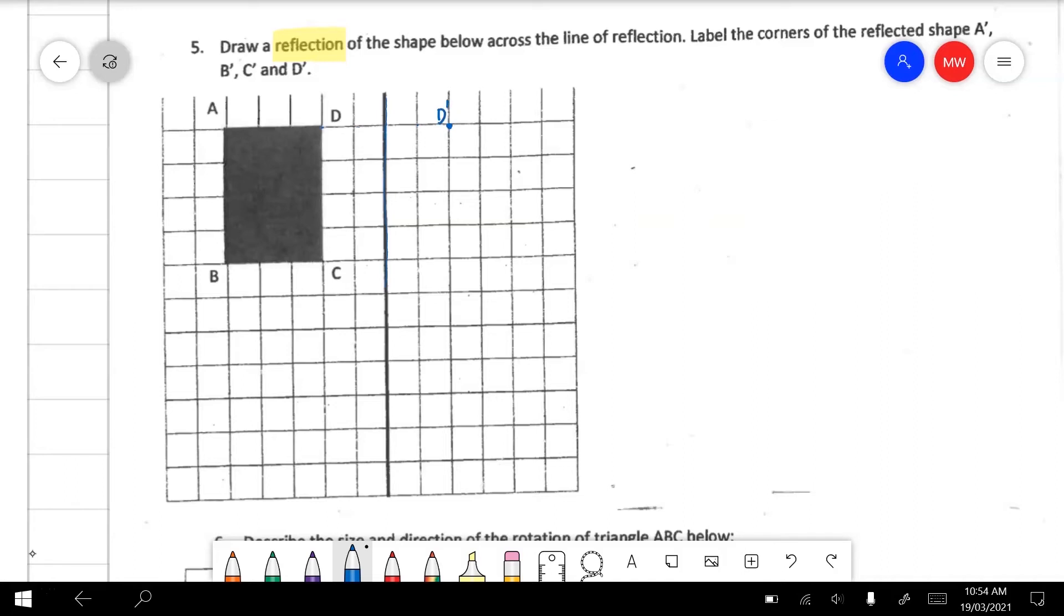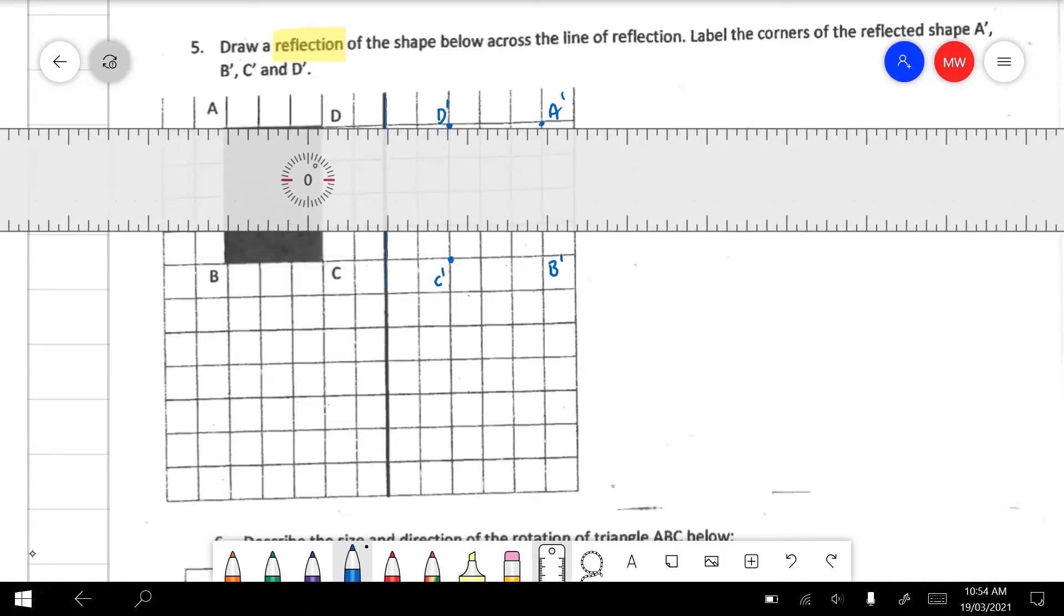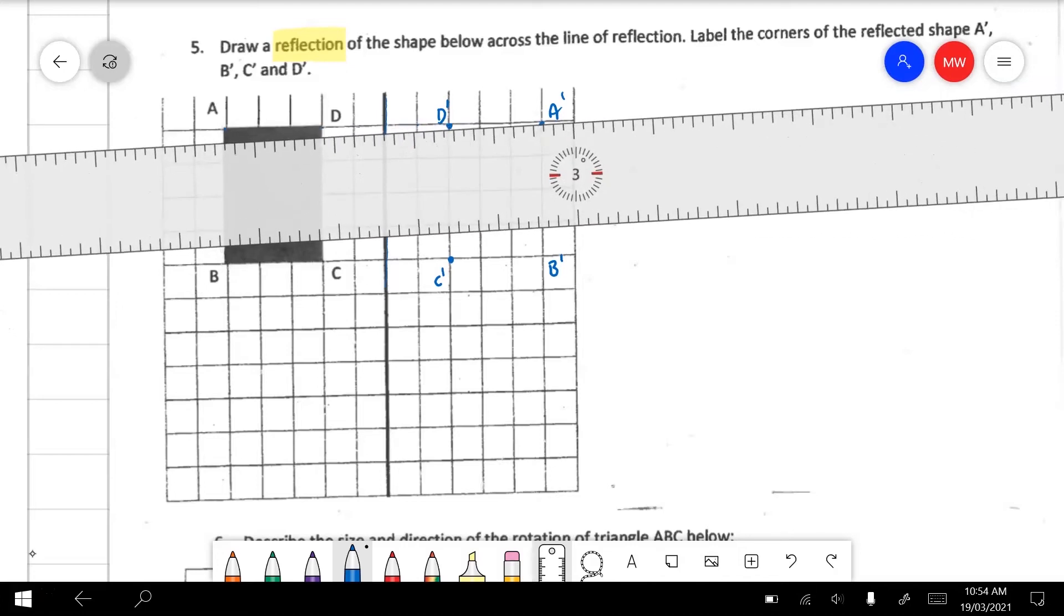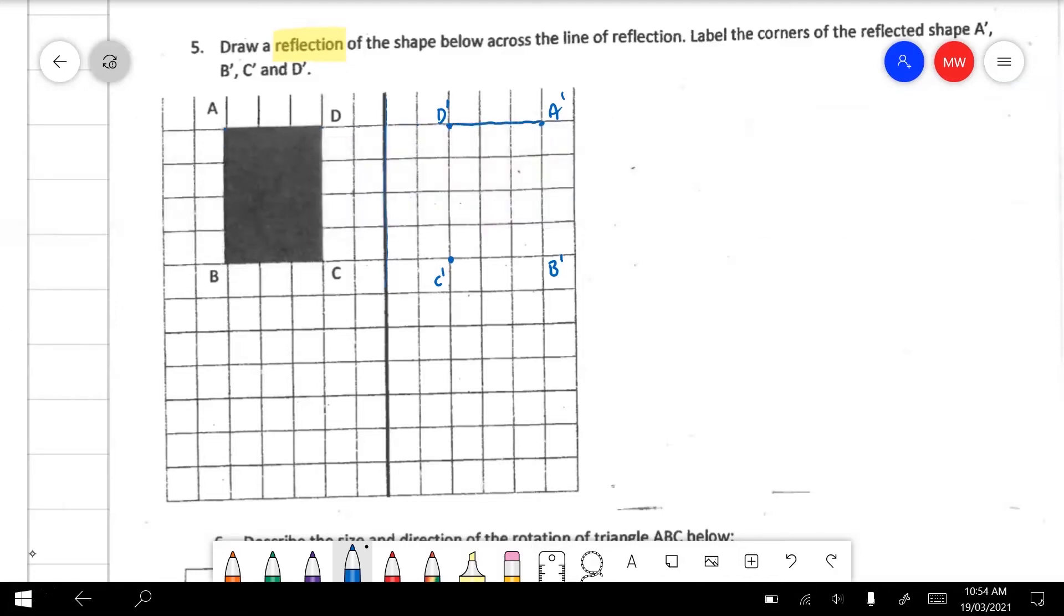We can see that A is five out. So if we go three, four, five, this becomes our new A position. So A dash. C goes in here as C dash. And B goes in here as B dash. And then we can just take our ruler and join it all together. I think we might have to freehand this because our sheet's not quite squashed. And we've successfully reflected our shape.